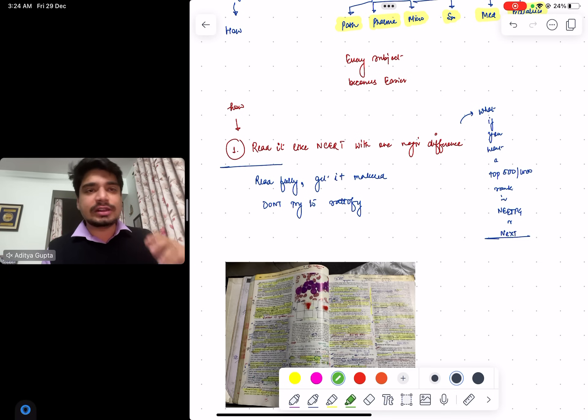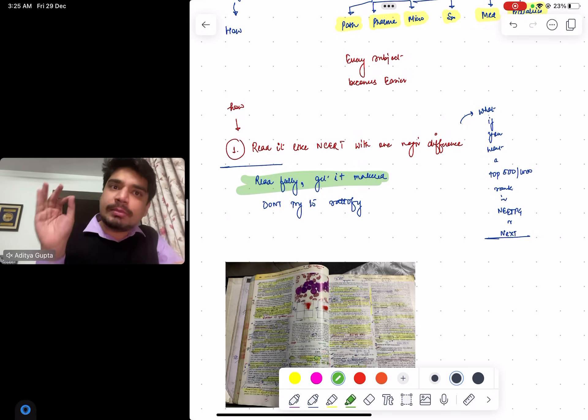But if you want to get a top 500 rank, you have to read Robbins like NCERT. Every topper that I've interviewed - top 100, 300, 500 - they read Robbins like NCERT, no doubt about that. Everyone is doing Marrow and Prep Ladder. Your difference to get a top 100-200 rank is how good your concepts are, especially your pathology concepts. There's an important difference I want to highlight. The problem with MBBS students is when I say read it like NCERT, they tend to consider they have to remember each and every line.